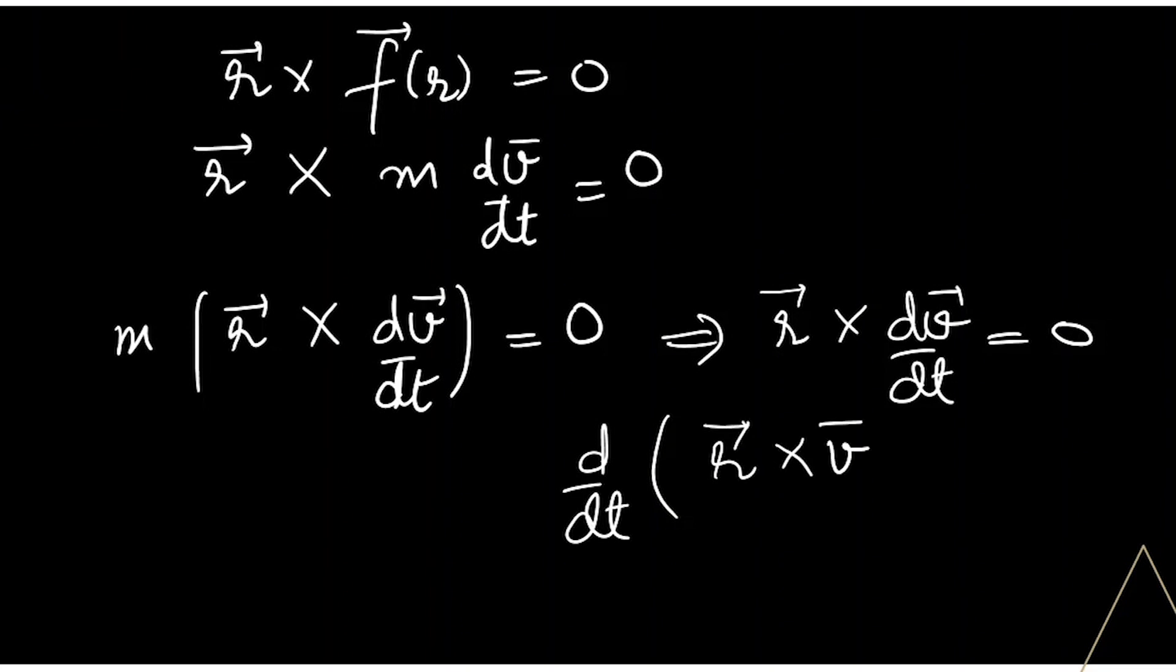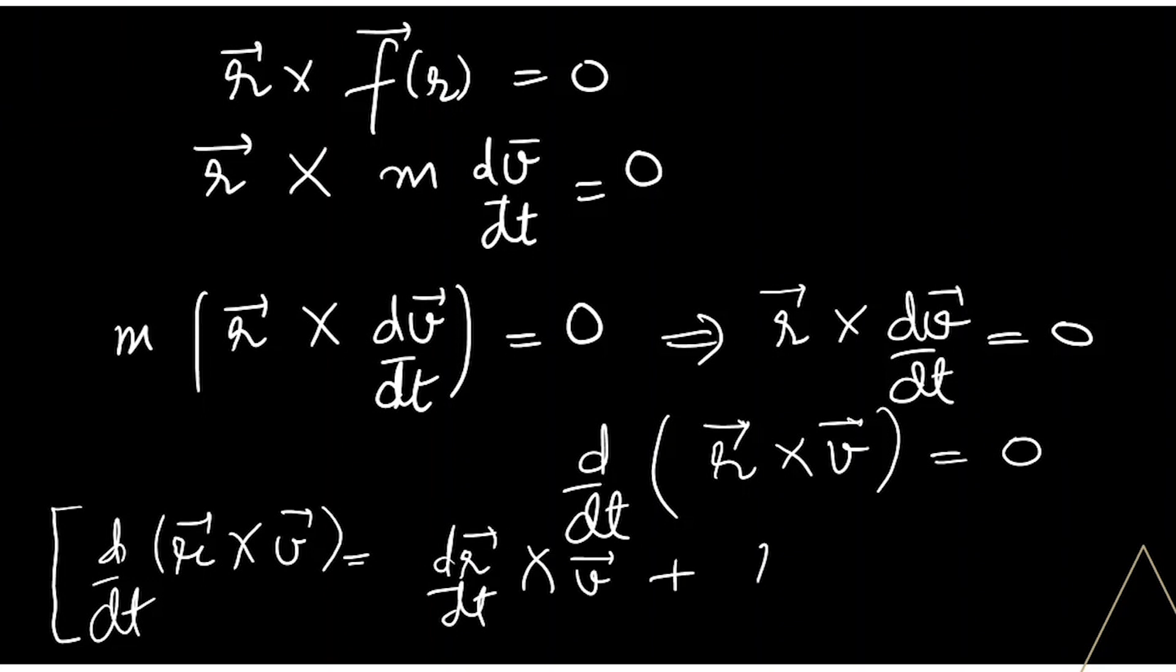So I will show you how we can write this. If we differentiate this: dR/dt cross V plus R as it is and then dV/dt. This is V, so V cross V will again be zero.